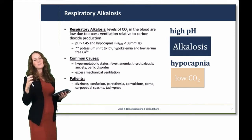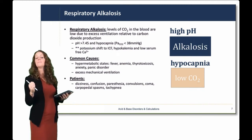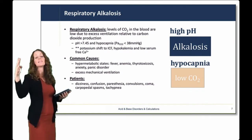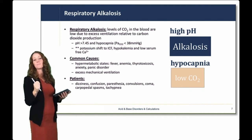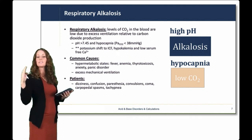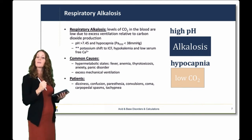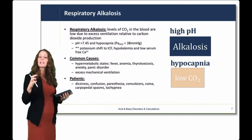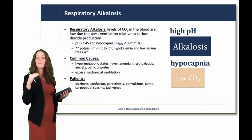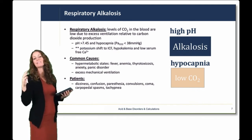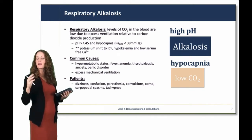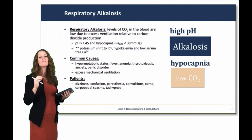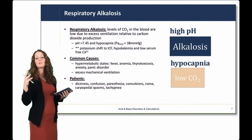Respiratory alkalosis is a high pH of the blood due to some respiratory cause. This is usually because of excess loss of carbon dioxide through the respiratory system. Think of times where you might have excess ventilation relative to carbon dioxide production — hypermetabolic states like fever, thyrotoxicosis, anxiety, panic attacks — but it's often due to provider error in excess mechanical ventilation in the hospital. The pH will be high, and the carbon dioxide levels will be low. Patients can have dizziness, confusion, paresthesias, and up to convulsions and coma.